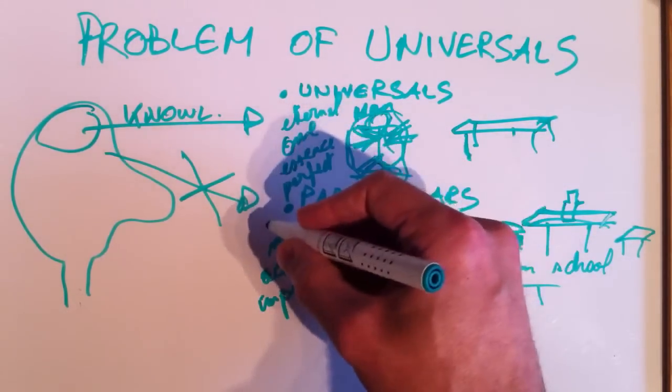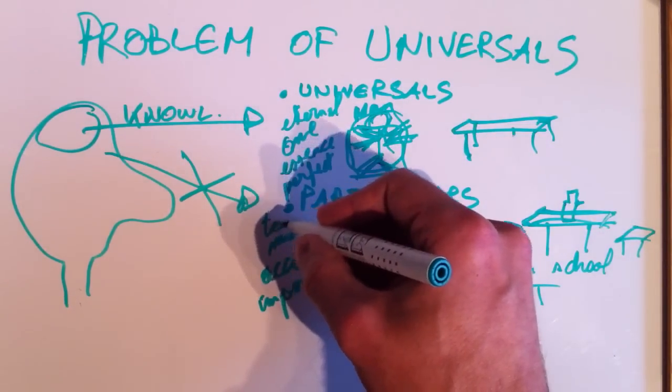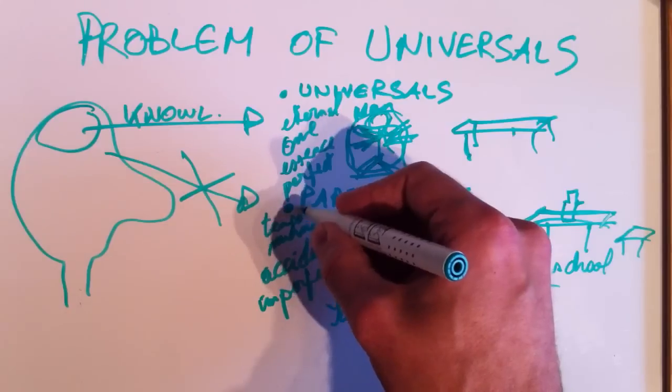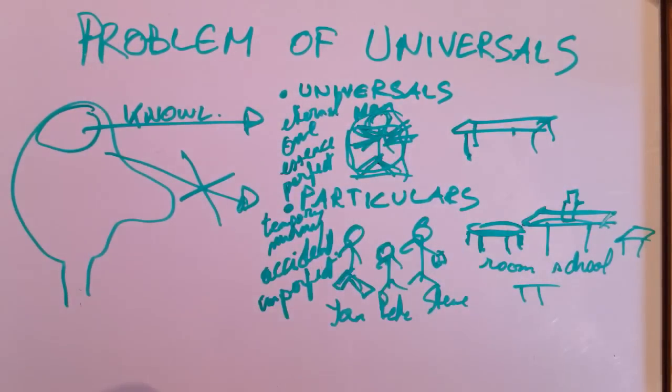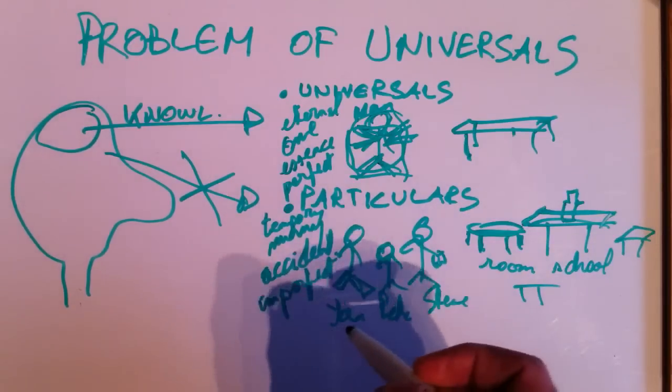So particulars are, let's say, temporary. They're temporary, they change. They might even die and disappear.